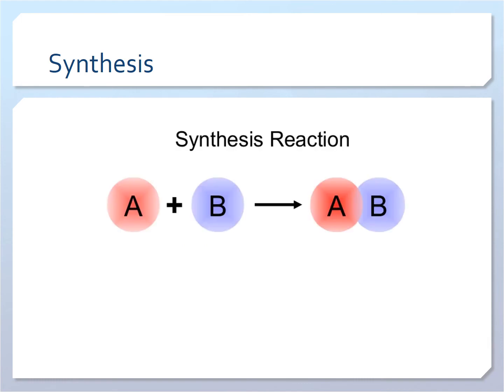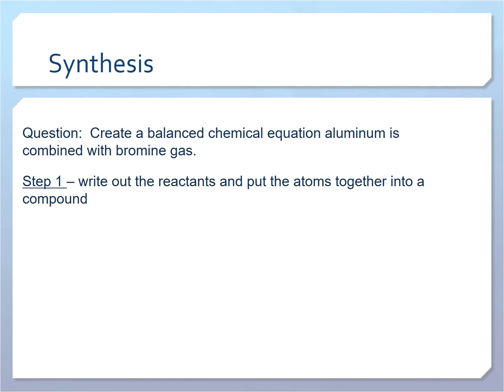Synthesis is two elements combining to make one compound, AB. So let's take a look at an example. Aluminum is combining with bromine gas.